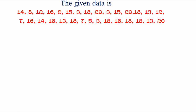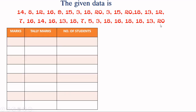Observe the data. The marks of the students are given. Now we will prepare a table that consists of 3 columns: first one is marks, second one is tally marks, third one is number of students. Here the minimum marks is 3, so take marks 3 and count the number of 3s in the data. For each one, we will take one tally line. There are 3 threes, so number of students is 3.